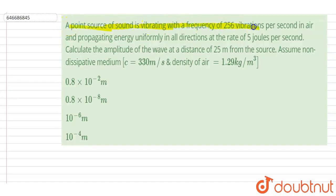sound is vibrating with frequency 256 vibrations per second in air and propagating energy uniformly in all directions at 5 joules per second. Calculate the amplitude of the wave at a distance 25 meters from the source. Assume that the